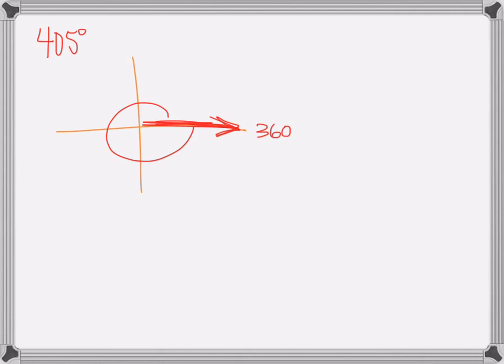But this is 405. So to know how far over I need to get, I'm actually going to take out the rotation here. So if I subtract 360, that's going to be 45 degrees over.